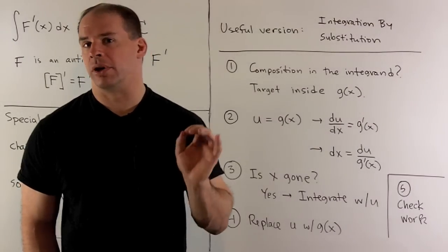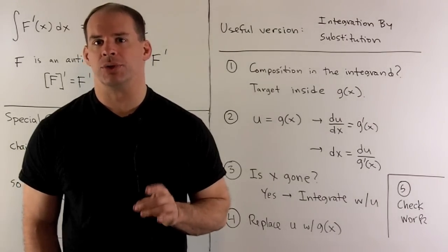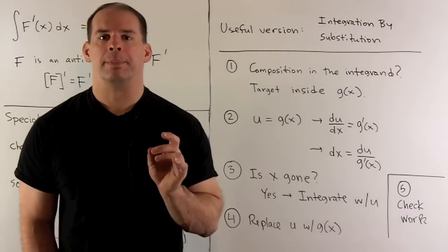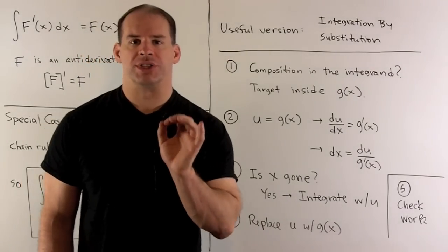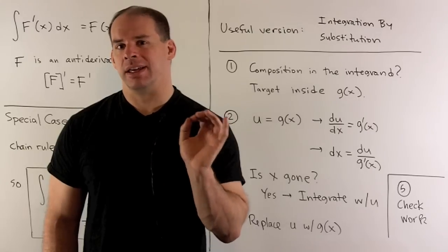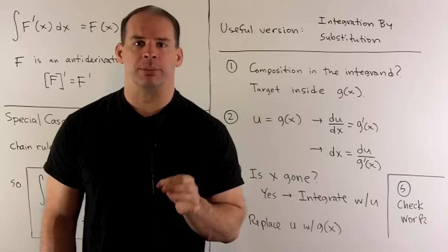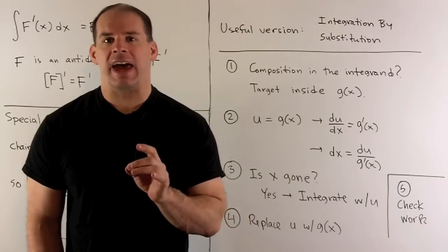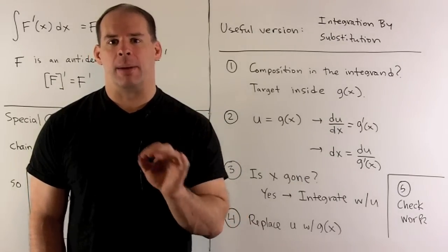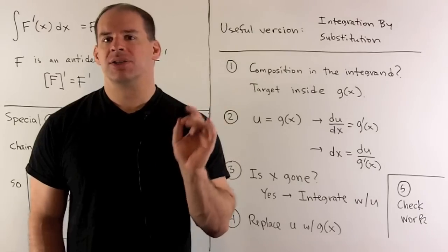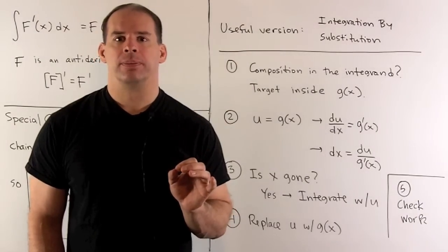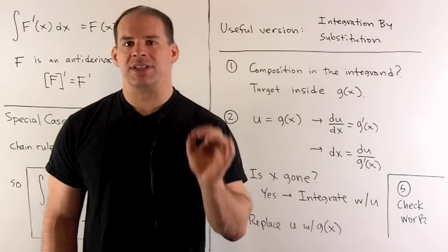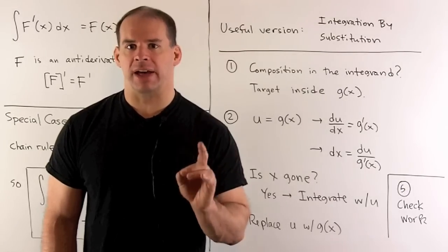Let's go through our checklist for integration by substitution, and then we'll look at some examples. Our first step: we have to ask, is our integral a candidate for integration by substitution? To see that, I have to identify a composition somewhere in my integrand. If I can do that, then we're going to target the inside function — we'll call it g of x.